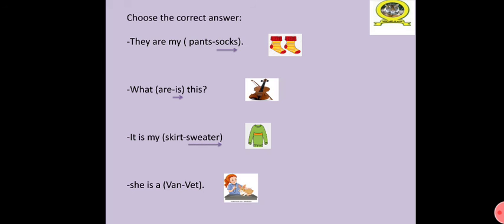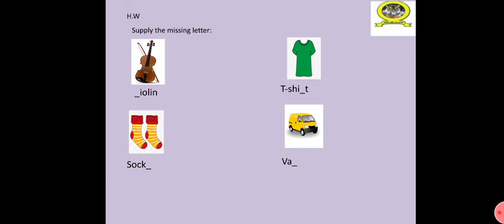This is your homework. Supply the missing letter. The first picture, violin. Number two, t-shirt. Number three, socks. Number four, van. Thank you and see you later.